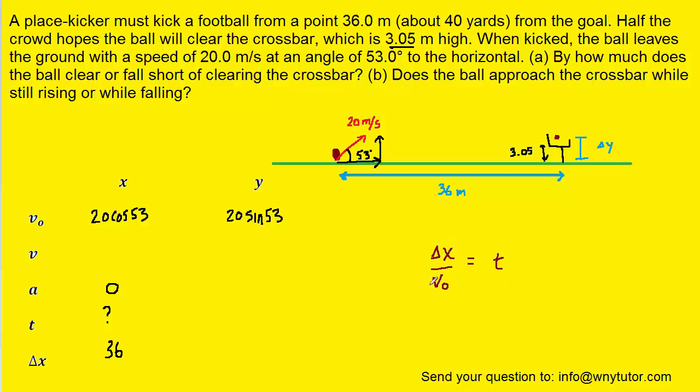And then we'll plug in the displacement and the initial velocity. Again, we're doing this for the x direction. And when you simplify that time on your calculator, you should get approximately 2.99 seconds. So that's how long it'll take the ball to travel horizontally from its initial starting point to the goal post.